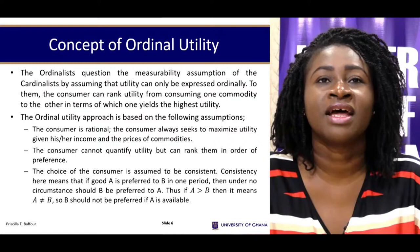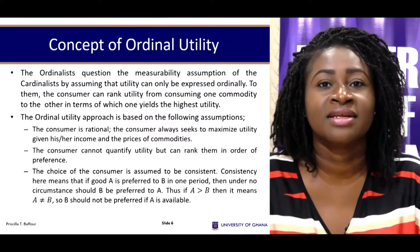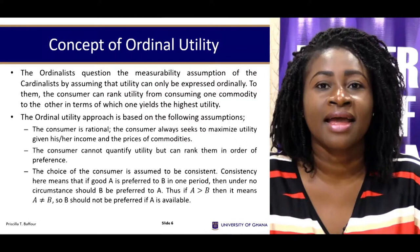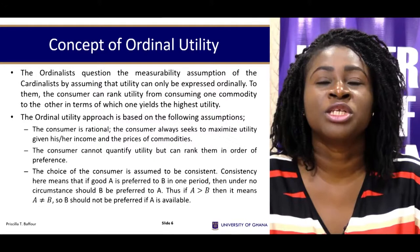Ordinalists believe that individuals cannot objectively measure the satisfaction they get from consuming a good. They propose instead that people are able to rank their satisfaction. For example, on any given day when you have a plate of jollof for lunch, your satisfaction is higher than when you have a plate of kenkey — meaning you are ranking your satisfaction instead of measuring it.